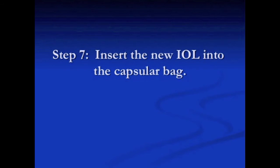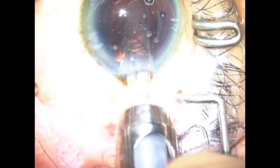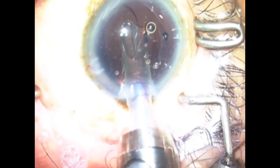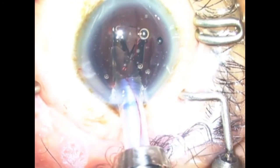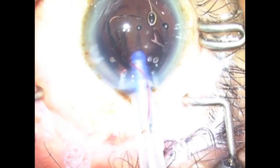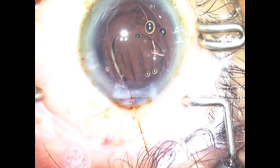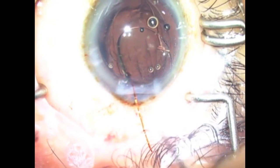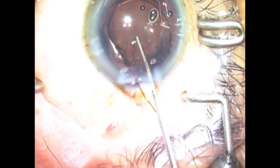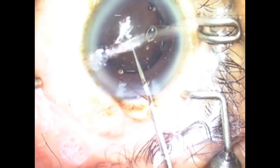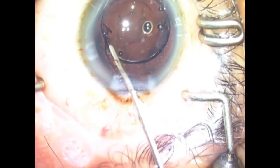Insert the new intraocular lens into the capsular bag. The lens haptics can be easily rotated into the expanded capsular bag.